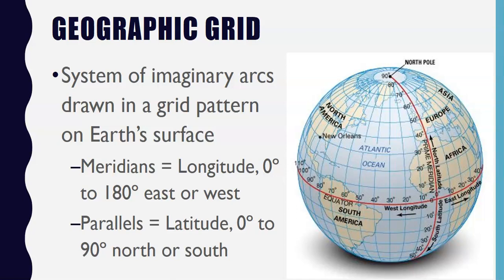Parallels are arcs that are drawn parallel to the equator and at right angles to meridians. Each is numbered according to a system known as latitude. Values of latitude range from zero degrees at the equator to 90 degrees north or south.